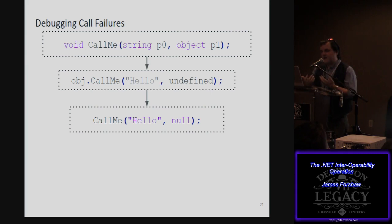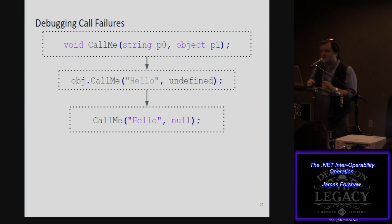One scenario is a function which takes a string and an object. You can pass 'hello' as a string, but you can't pass null — or rather, passing null would just box the DBNull into an object type, which is not what you want. You want it to pass null. So you pass undefined instead, and that works — you can call the function with a string and null as the second parameter.